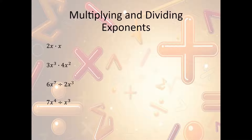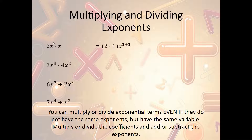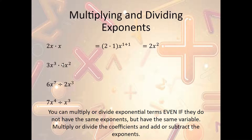When we multiply or divide exponents, even if they do not have the same exponents but have the same variable, we can still do it. The rule is: multiply or divide the coefficients and add or subtract the exponents. If we're multiplying, we add the exponents. So x times x is x¹ plus x¹ — coefficients 2 times 1 is 2, exponents 1 plus 1 is 2, giving us 2x². Another example: 3x³ times 4x² — multiply coefficients: 3 times 4 is 12; add exponents: 3 plus 2 is 5. So we get 12x⁵.